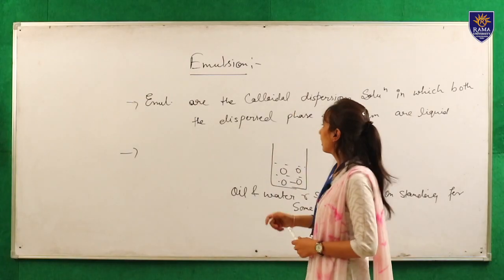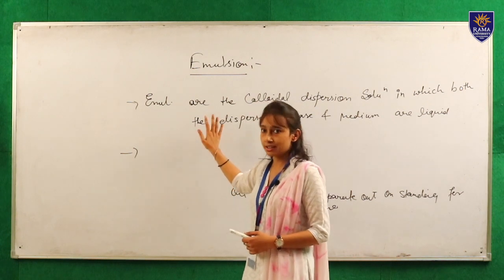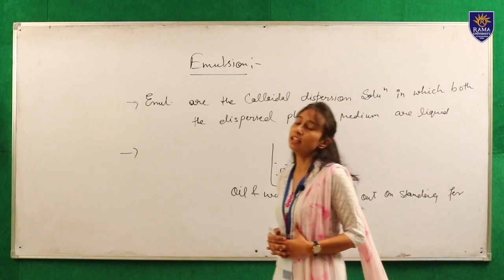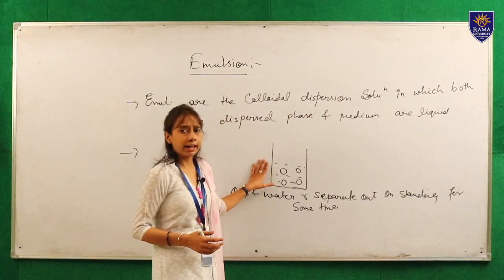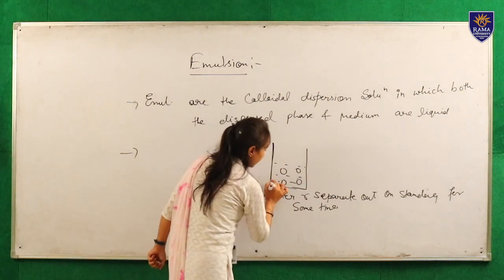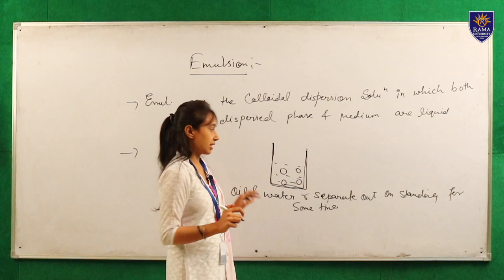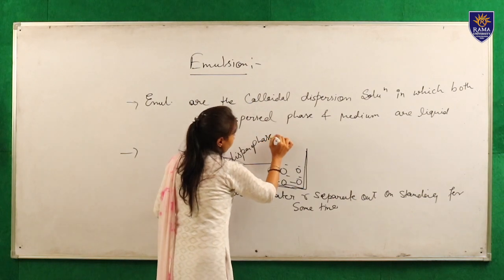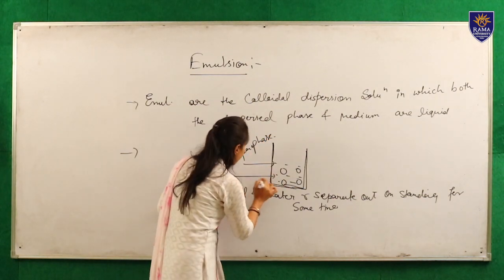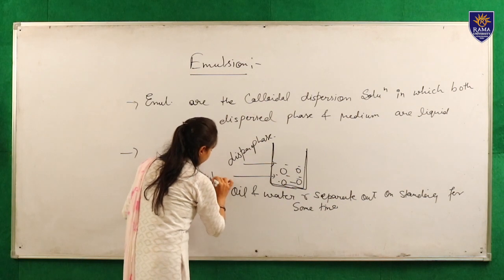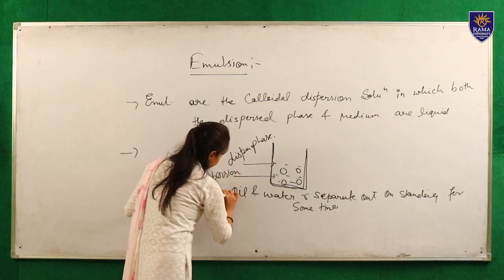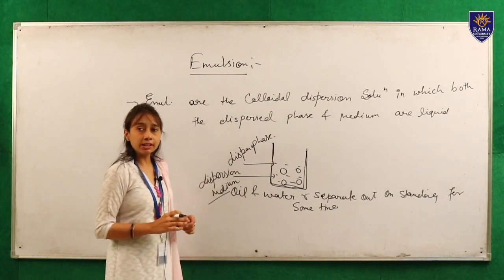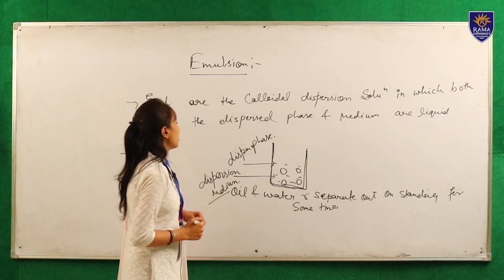Starting with the introduction of emulsion: emulsions are a two-immiscible-liquid dosage form. The definition is that emulsions are colloidal dispersion solutions in which both the dispersed phase and the dispersion medium are in liquid form. One liquid is dispersed and uniformly distributed in another liquid.